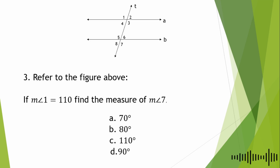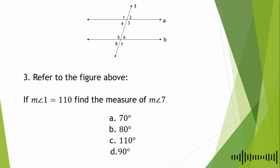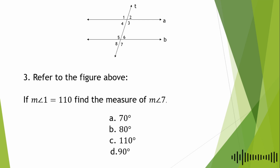The third question: refer to the figure above. If the measure of Angle 1 is equal to 110 degrees, find the measure of Angle 7. A. 70 degrees, B. 80 degrees, C. 110 degrees, and D. 90 degrees.